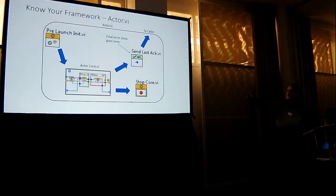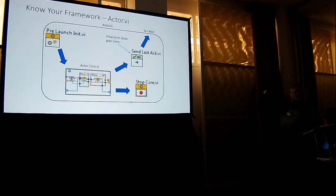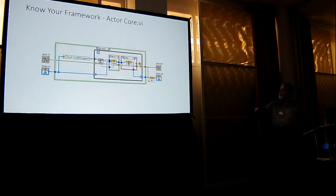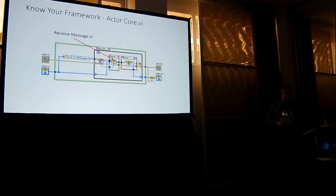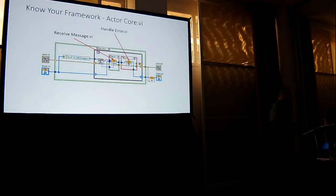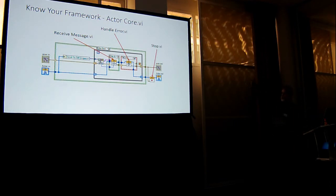Inside actor core, we pop a message off of our queue, handle it in receive message on VI. If it generates an error, we handle that in handle error, and then we stop and run stop core. All three — handle error, receive message, and again — are overrides you can change. This is how we make actors do what we need. Is this familiar to everybody here? It should be if you're using Actor Framework.